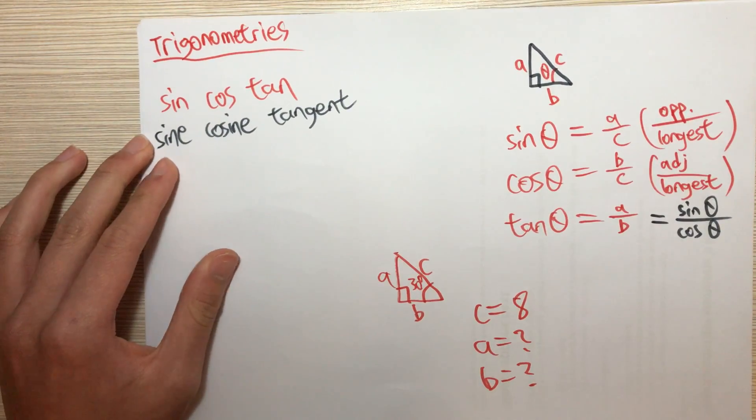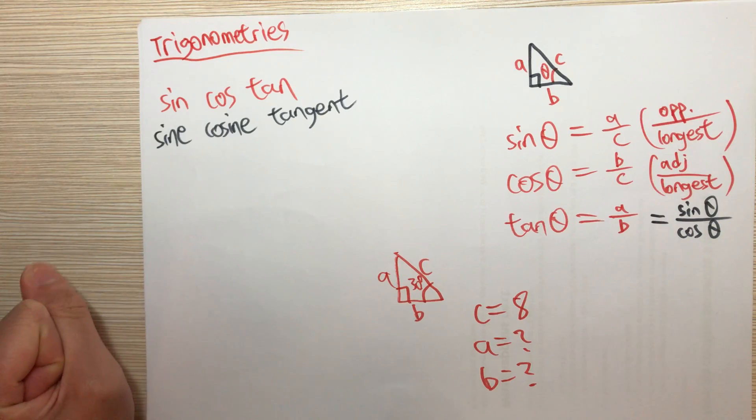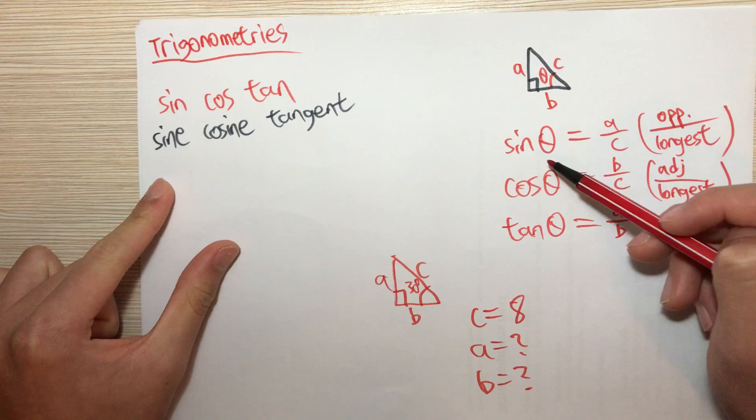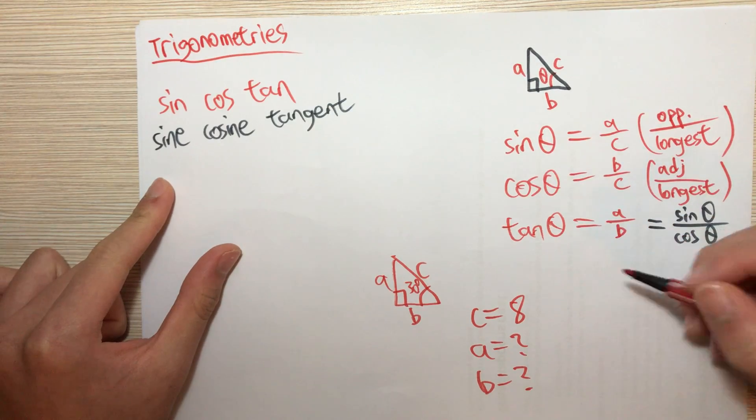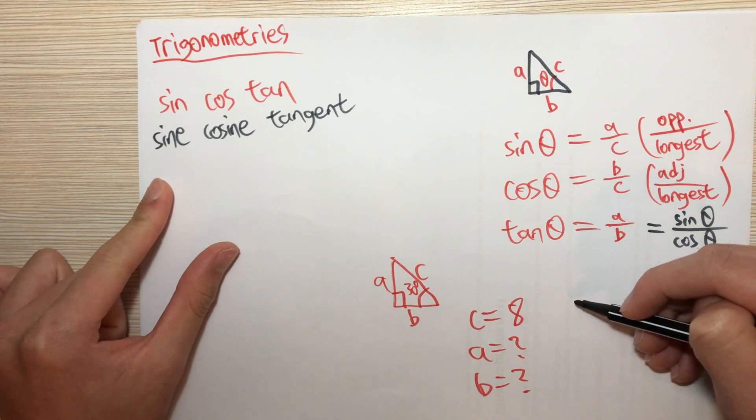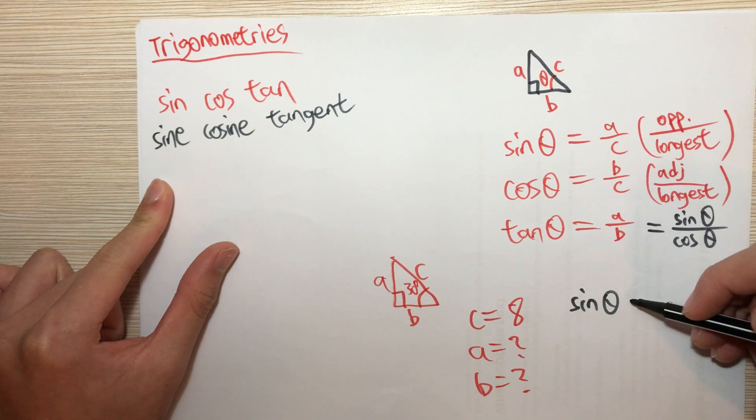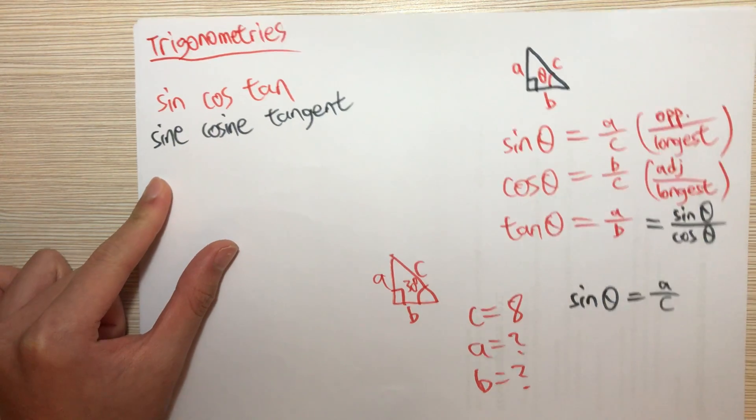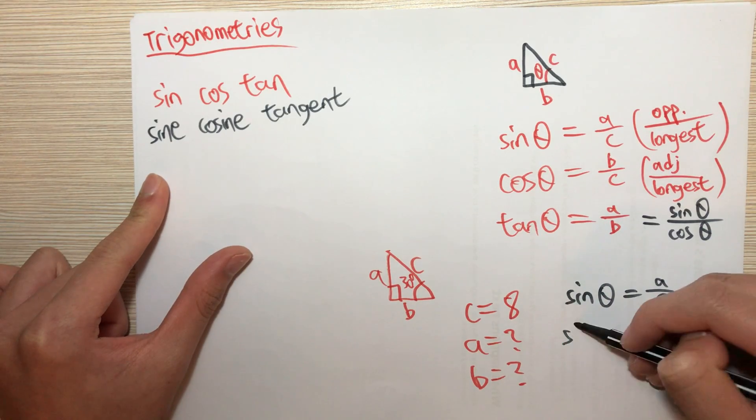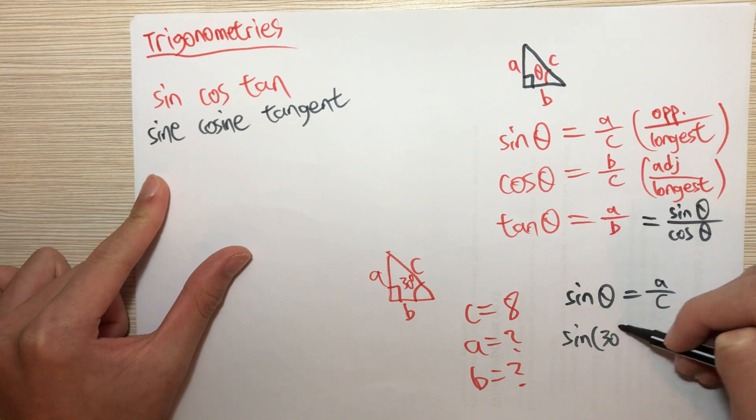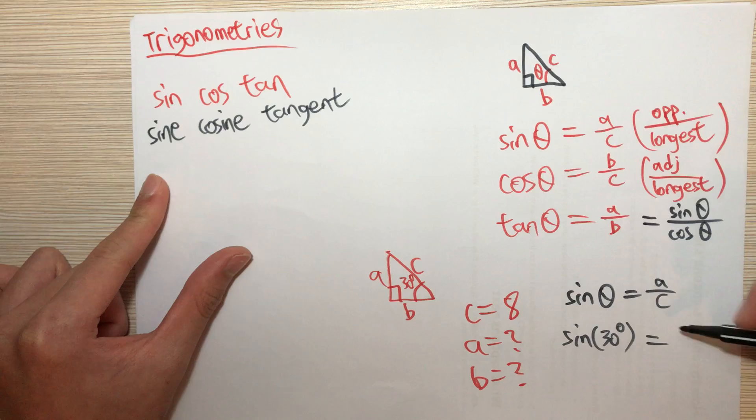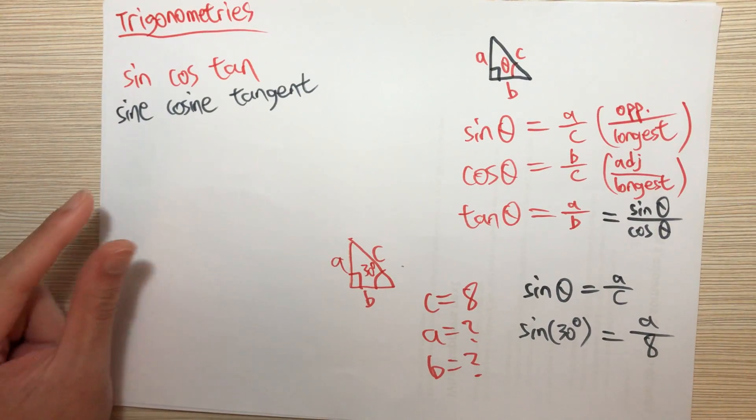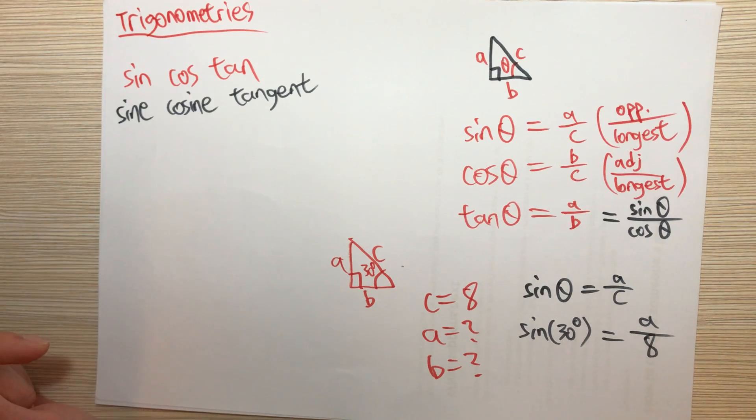Now given that C is equal to 8, how can we find A and B? Trigonometry is so useful. Remember that if we want to find A, we will use sine. So we have an equation saying that sine theta equals A divided by C. Now theta is just 30 degrees, so it will be sine 30 degrees equals A over C is 8.